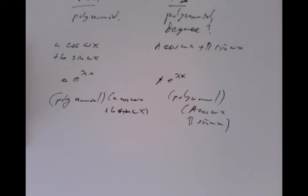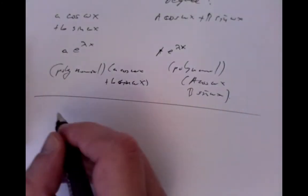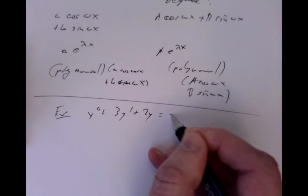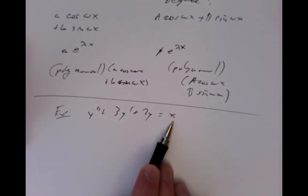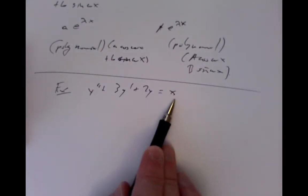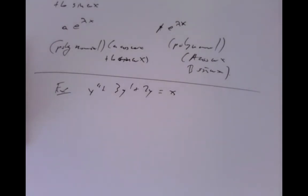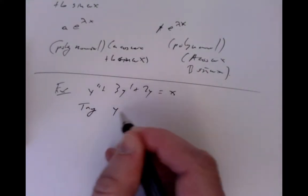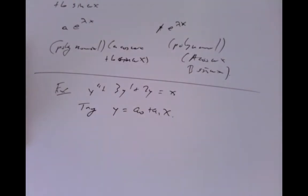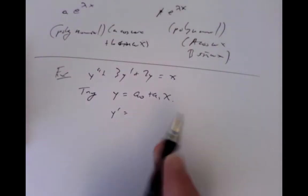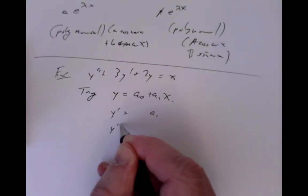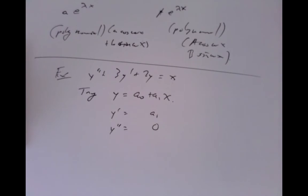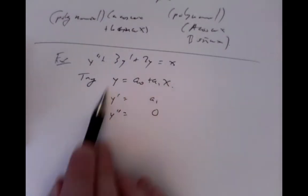Let's try a simple example: the equation y'' + 3y' + 2y = x. That's inhomogeneous because of the x on the right, and our trick is to try a polynomial of about the same degree. That polynomial has degree 1, so we'll try y = a0 + a1*x. Its derivative is just a1 and its second derivative is 0, because the second derivative of a linear function is zero. We'll plug those in and see what we get.